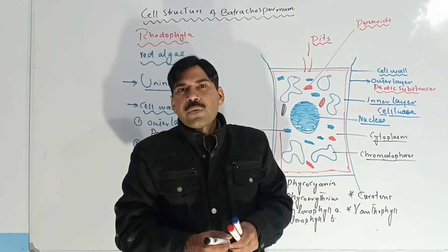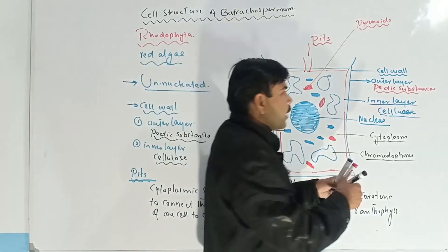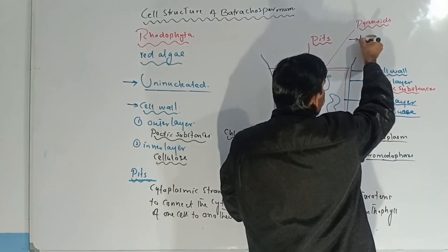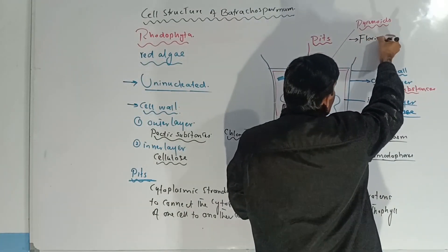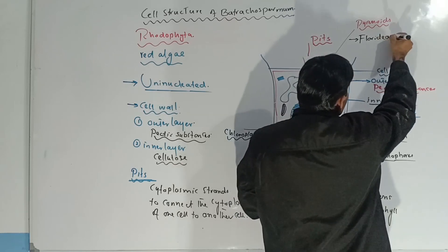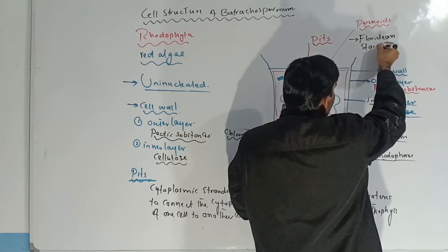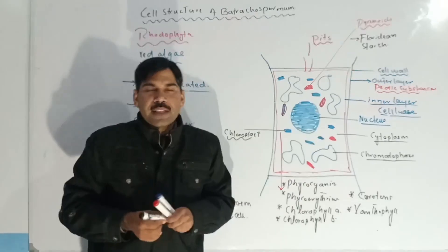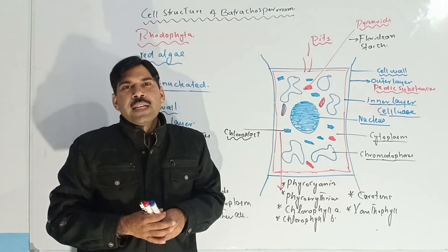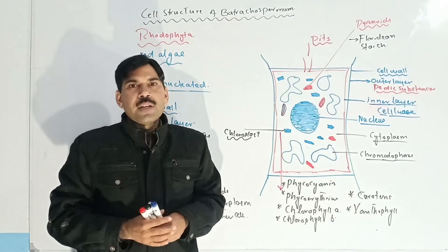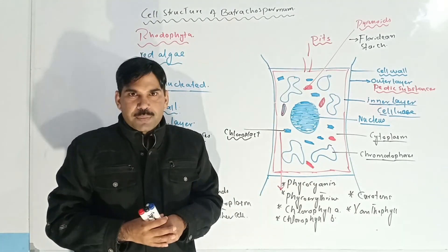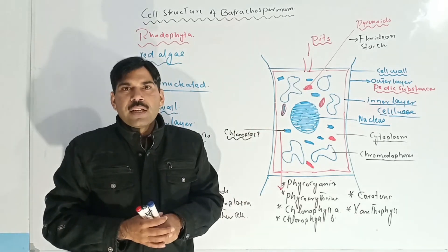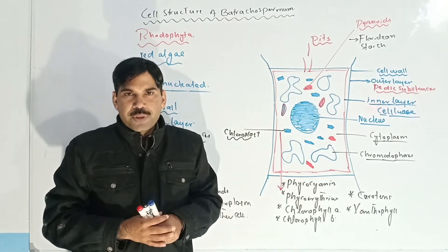The type of food stored in these pyrenoids is floridian starch, which is a type of starch. Floridian starch is present in these pyrenoids as a reserved food material in the cell of Batrachospermium. So that was all about the cell structure of Batrachospermium.